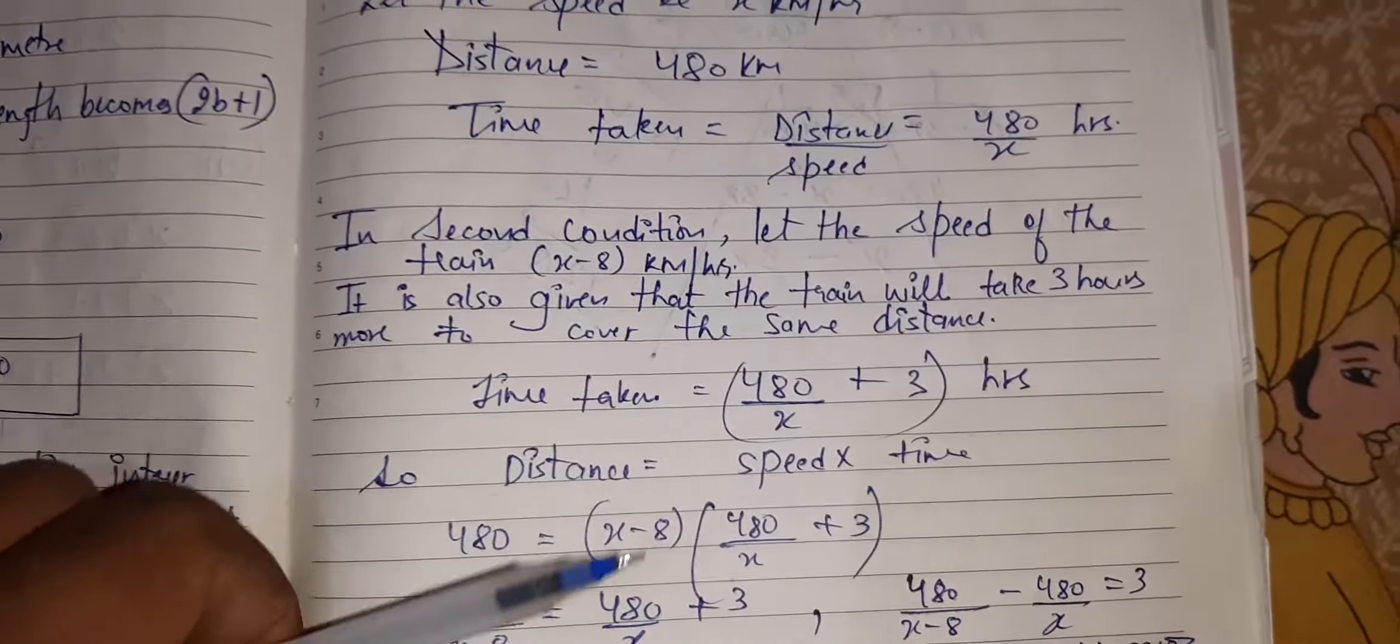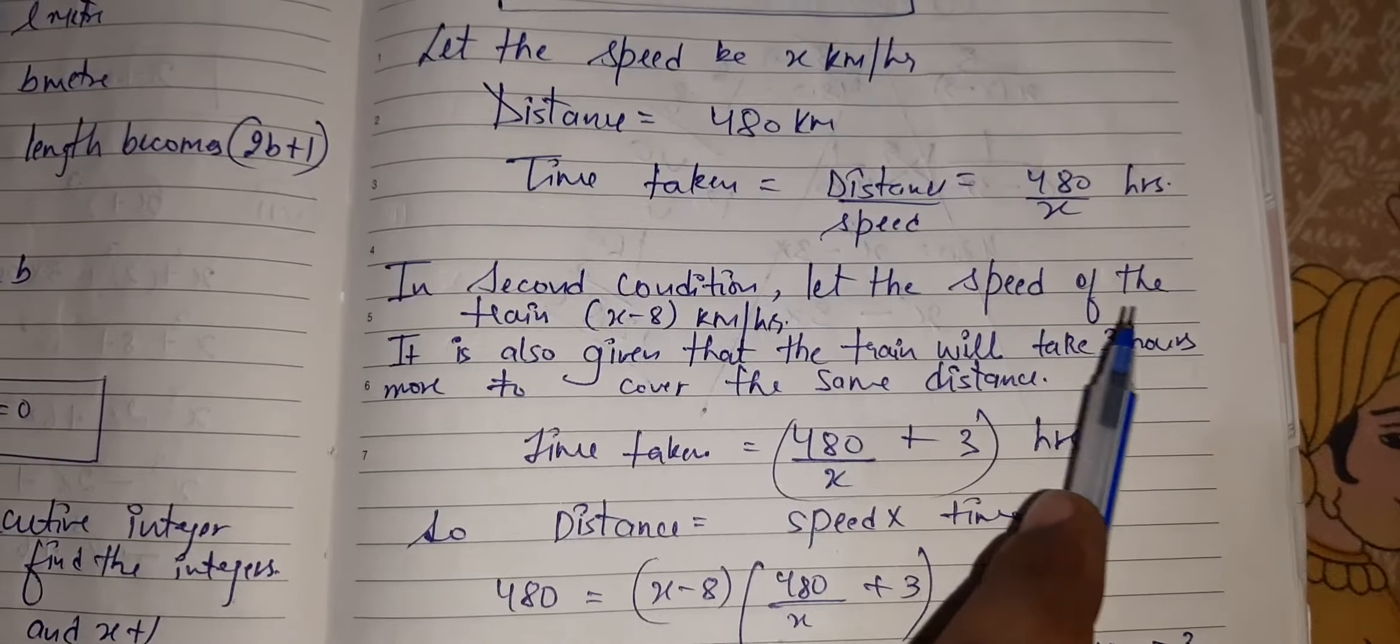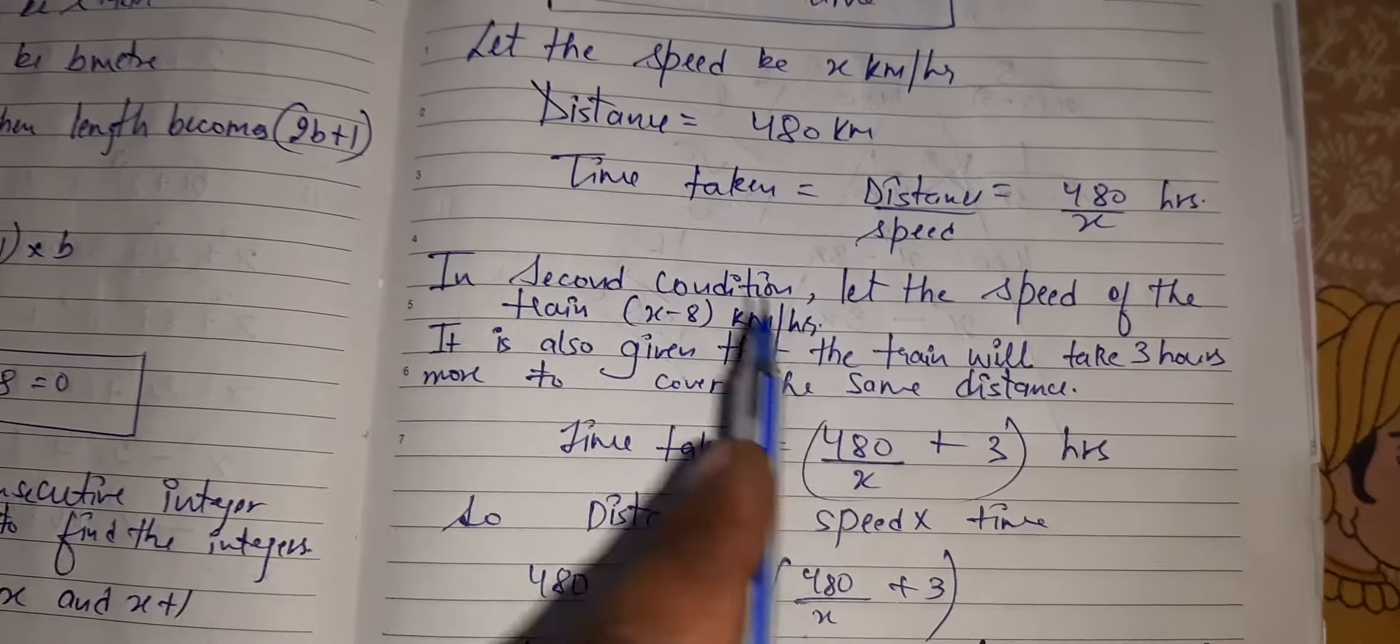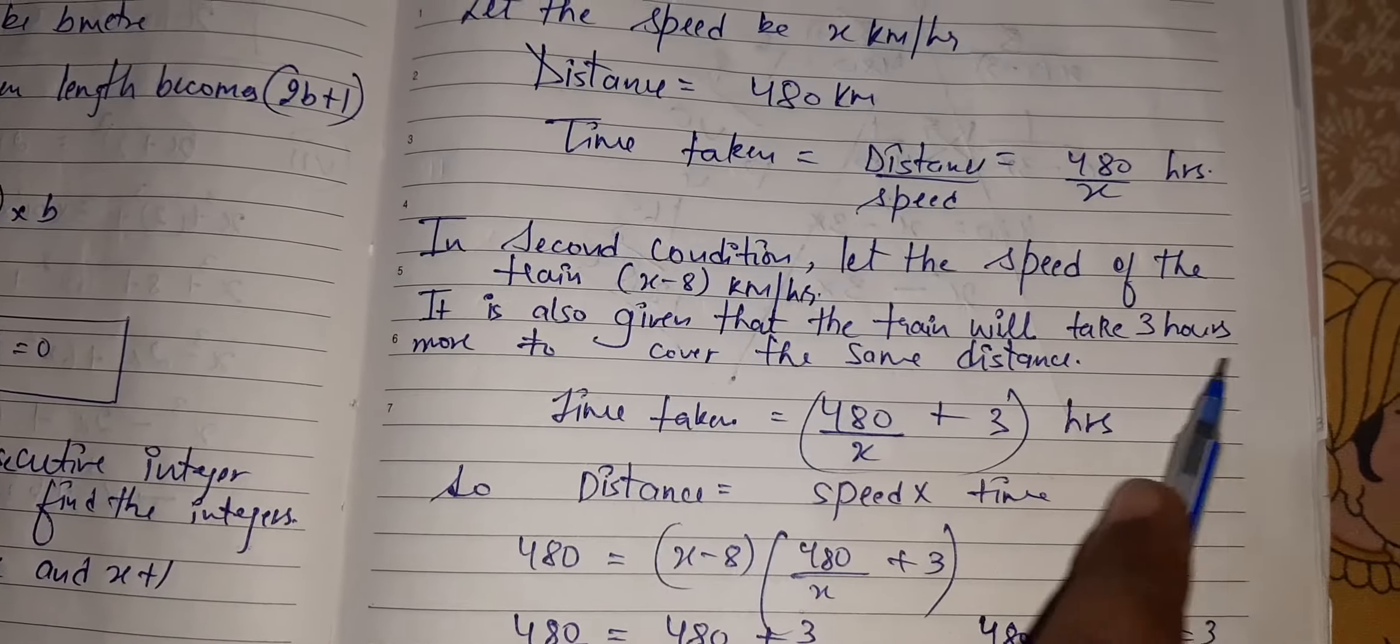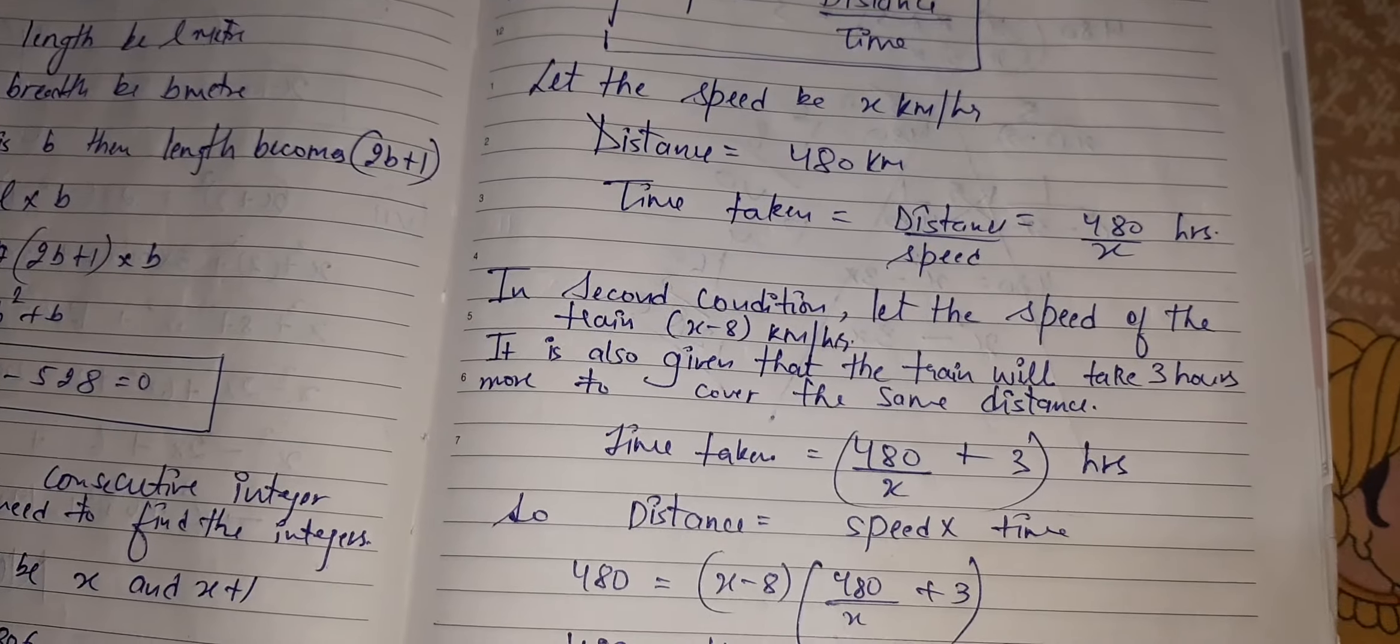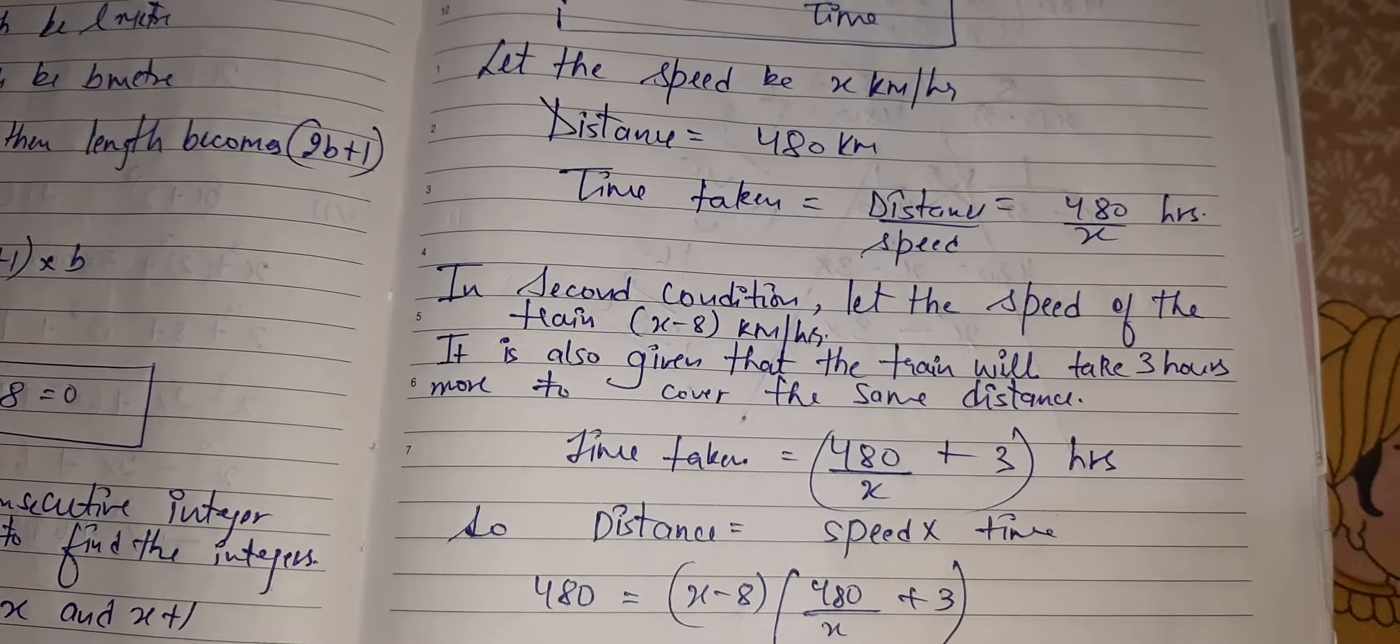In the next condition, it has told us, if the speed is 8 km per hour less, let the new speed be X minus 8. It is also given that the train will take 3 hours more. You see, it is given that if the speed is 8 km per hour less, it would have taken 3 hours more.